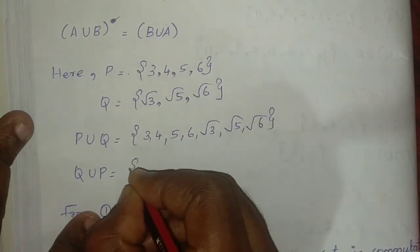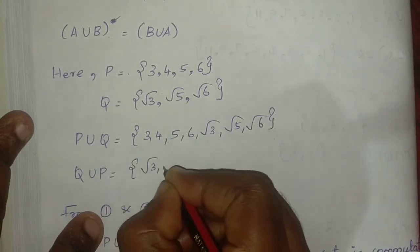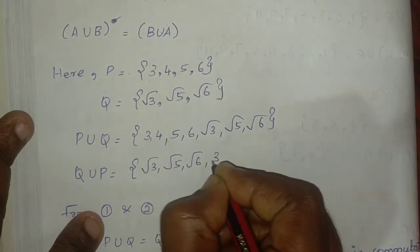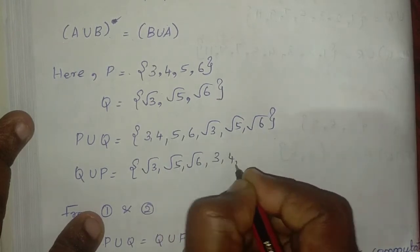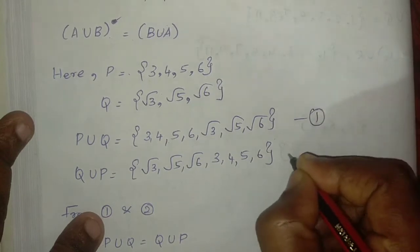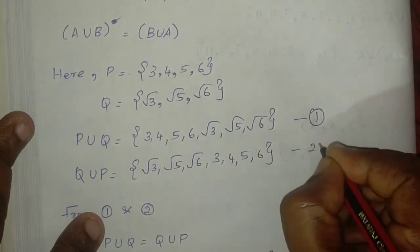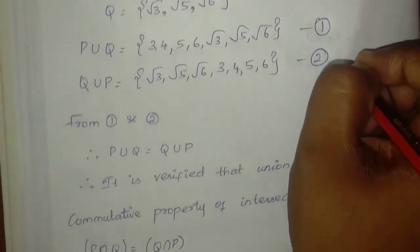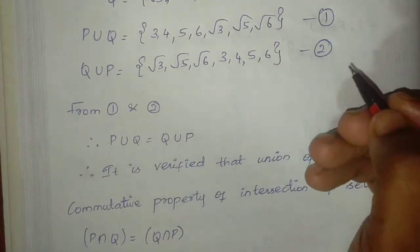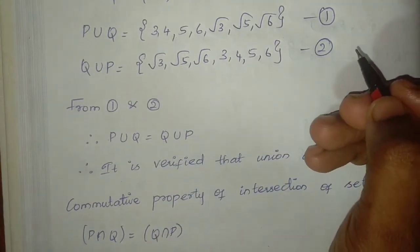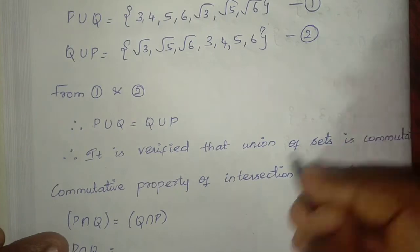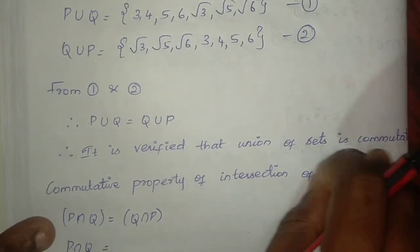Q union P equals {root 3, root 5, root 6, 3, 4, 5, 6}. The two results are the same, confirming the commutative property. From equations 1 and 2, P union Q equals Q union P. Therefore, it is verified that union of sets is commutative.